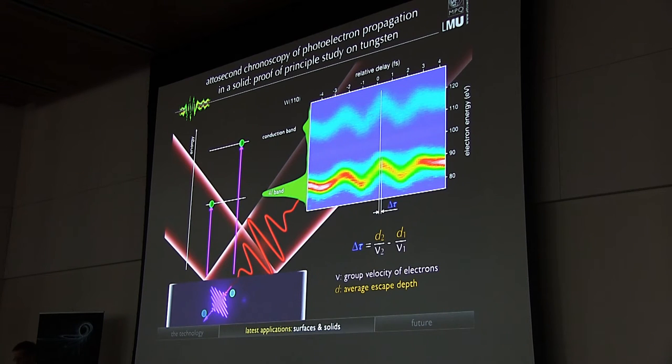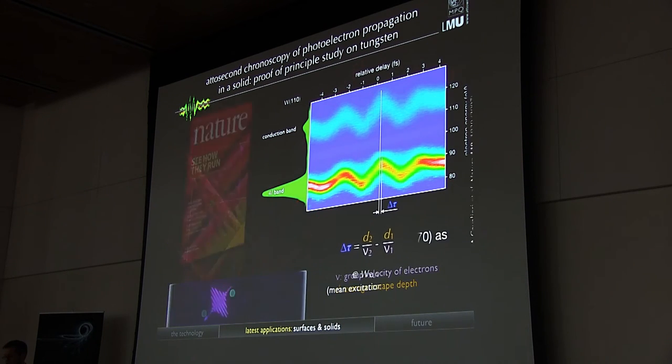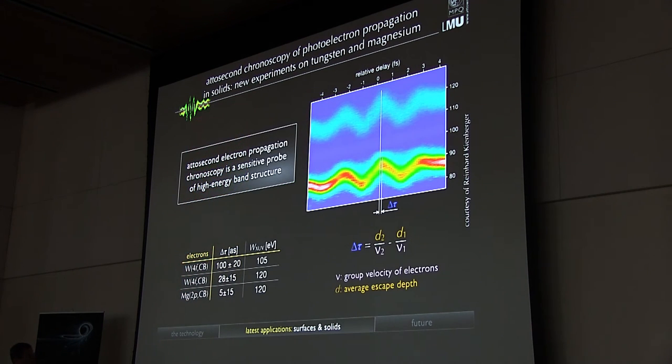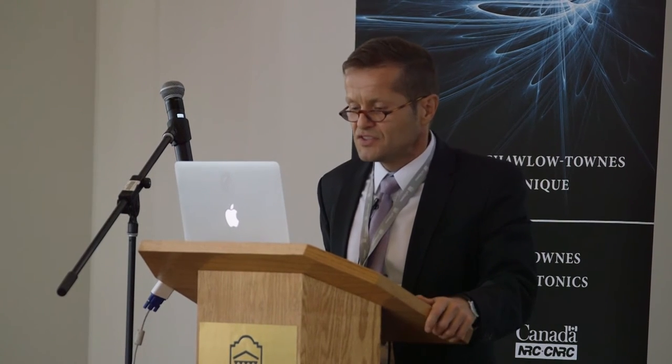This experiment was performed by Andrius Baltuska and Andrea Cavalieri back in 2007. Meanwhile, quite a few follow-up studies have been performed in a much improved apparatus under the leadership of Reinhard Kienberger. And these follow-up studies have brought to light a very strong dependence of propagation delays on both material choice, system choice, as well as the excitation photon energy, which has been varied here by merely 15 electron volts, so by something like 10%. And this 10% variation resulted in a vast variation of propagation delays. So obviously, electron propagation chronoscopy, as this technique might be dubbed, turns out to be a very sensitive probe of high energy band structure.